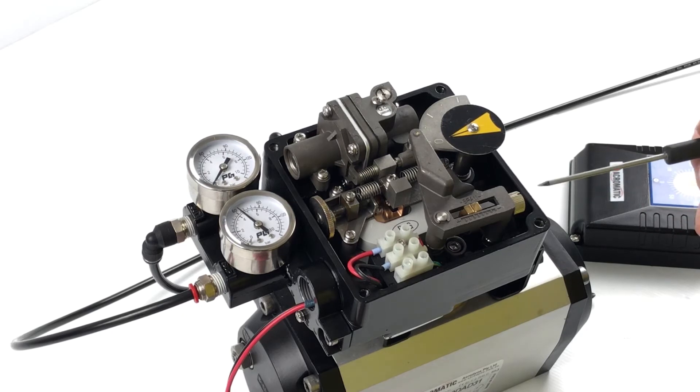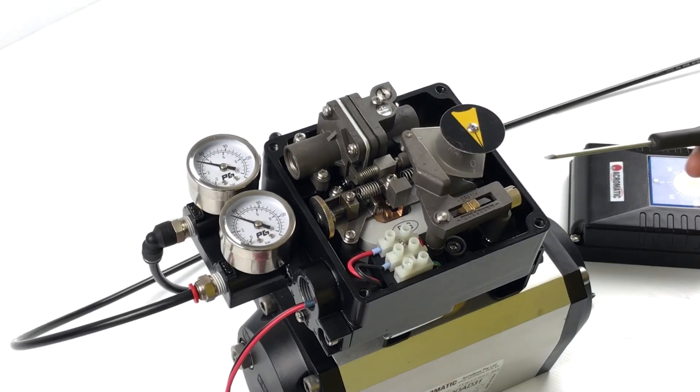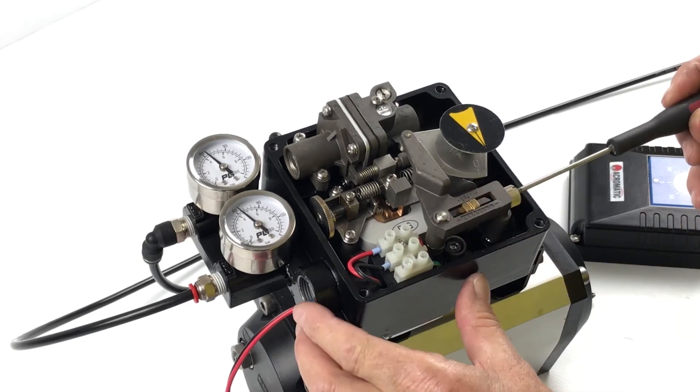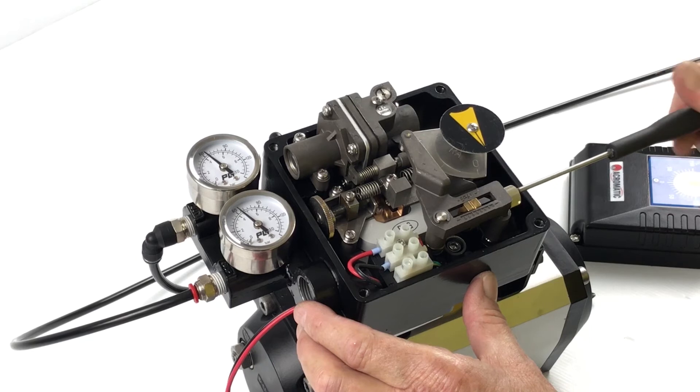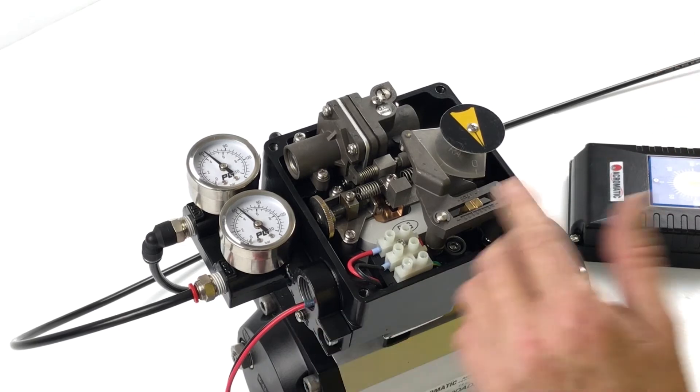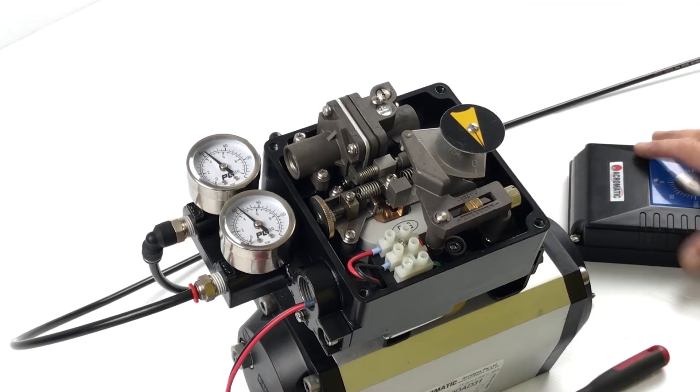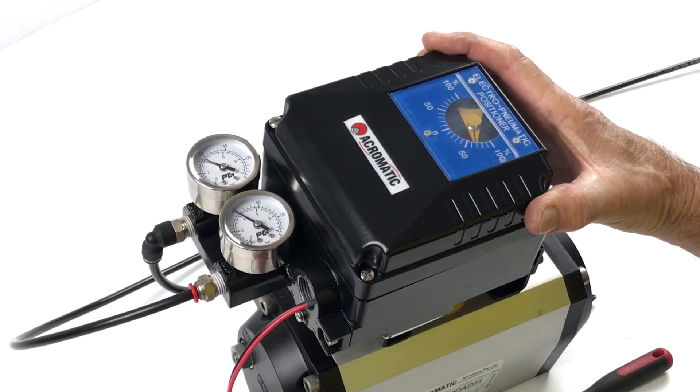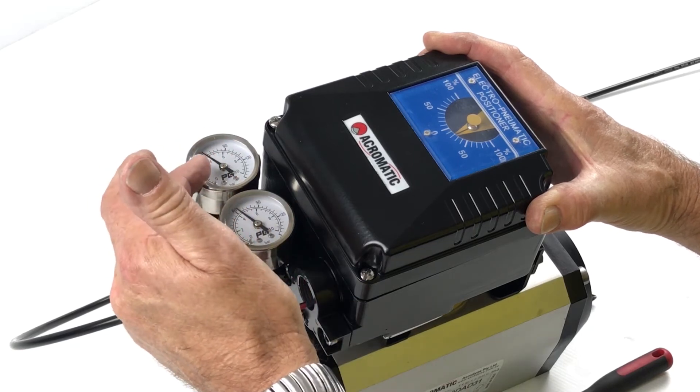So I'll go up to the top end and decrease the span by moving this towards the negative. You can see the indicator moving away. We've still got pressure on the gauge there.